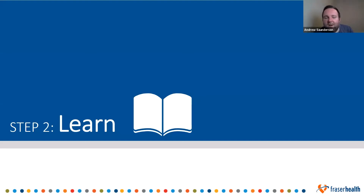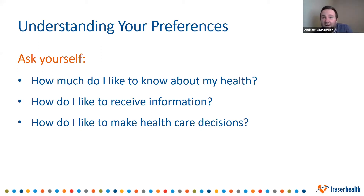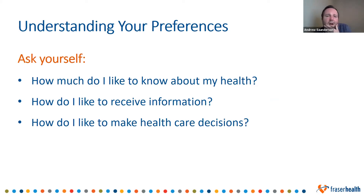The second step of advanced care planning is learn. We're asking you to learn about a few different things. First, learn about your preferences. Ask yourself: how much do you even like to know about your health? Some of us like to know everything, including what Dr. Google tells us. And some of us like to know very little — just the small details. How do I like to receive that information? Some prefer to hear it verbally, some want it in writing, others prefer diagrams or visuals to better understand.